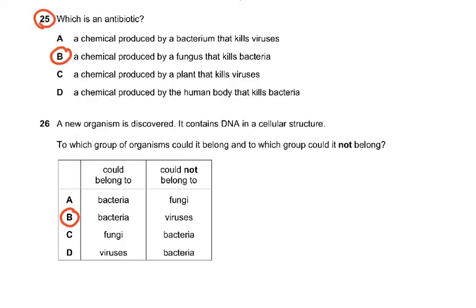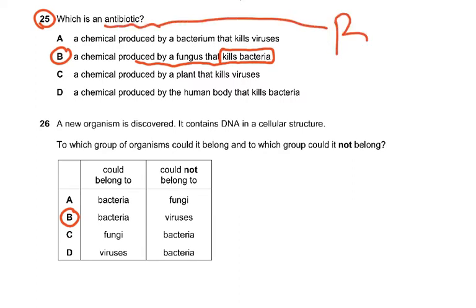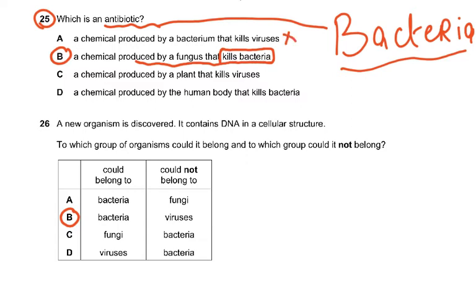Question 25: which is an antibiotic — a chemical produced by a fungus that kills bacteria? The important thing is that antibiotics kill bacteria. Anywhere where viruses were mentioned, that was wrong. A chemical produced by the human body that kills bacteria would be antibodies. Antibiotics are NOT produced by the human body — please understand that.